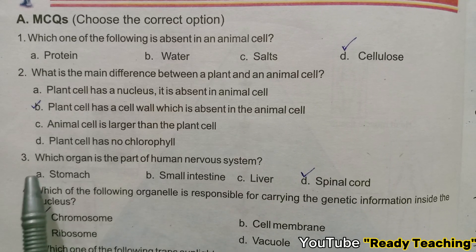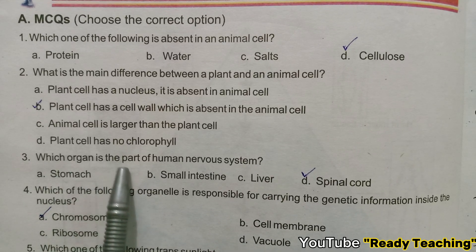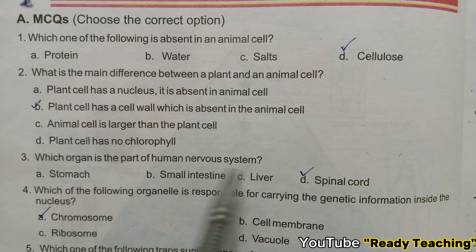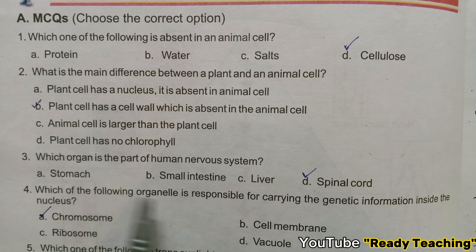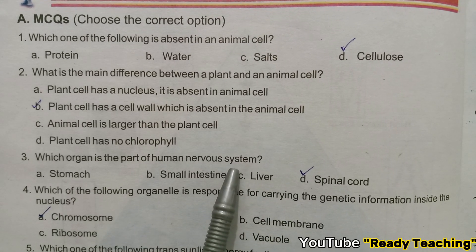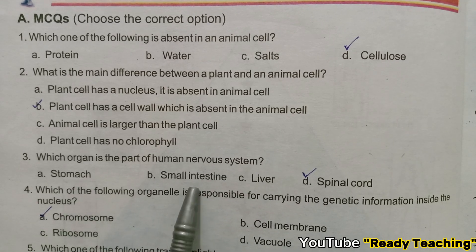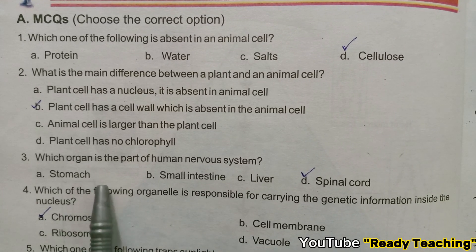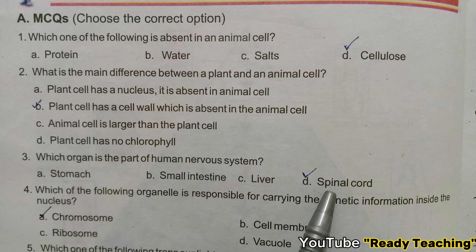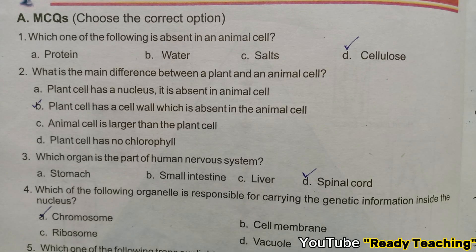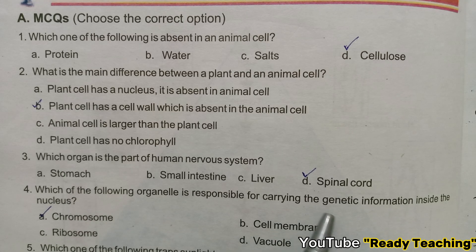Next question: Which organ is part of the human nervous system? Options include stomach, small intestine, liver — all of these belong to the digestive system. The spinal cord is the correct answer — it belongs to the nervous system.